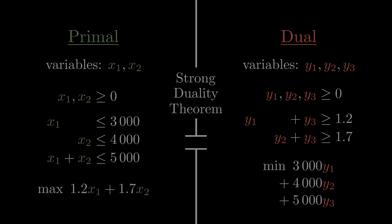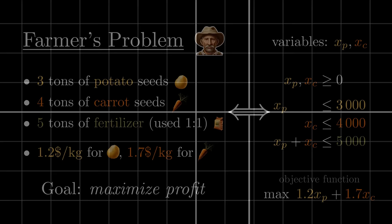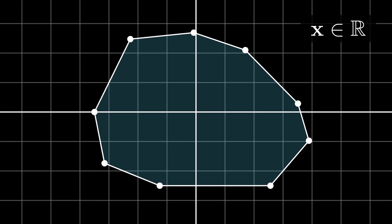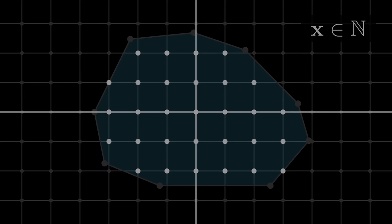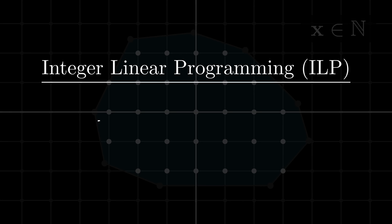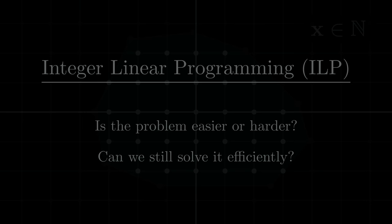It's now safe to say that we've thoroughly covered the farmer's problem, but it turns out that we were actually pretty lucky. When formulating the problem, we decided that the variables are real numbers, since planting a fraction of a kilogram makes sense. However, imagine that the things we wanted to plant were trees. In that case, we would like to restrict the solutions to integers only, since planting a portion of a tree is difficult. This is referred to as integer linear programming, or ILP for short, and it naturally poses two questions. Is the problem easier or harder than linear programming? And can we still solve it efficiently? Well, to illustrate that it gets a whole lot harder, we'll formulate the knapsack problem, an infamous NP-hard problem, as an integer linear program.